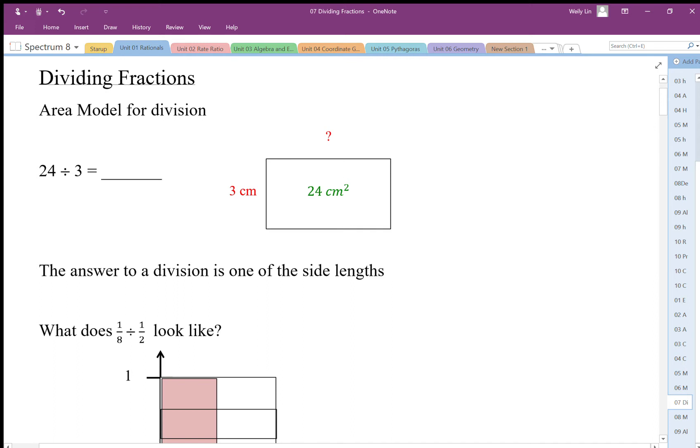Essentially, division is we're just trying to figure out, starting with the area and knowing one of the side lengths, we're trying to find the other side length. So in this case we have area divided by length equals the other length, or we'll say area divided by width equals length.